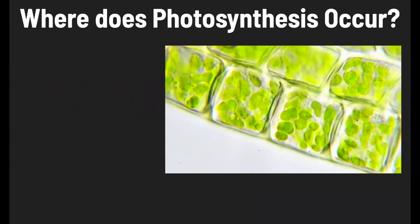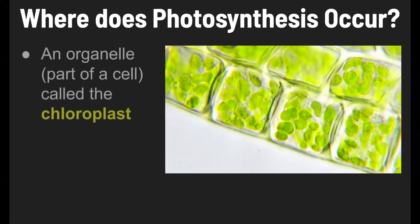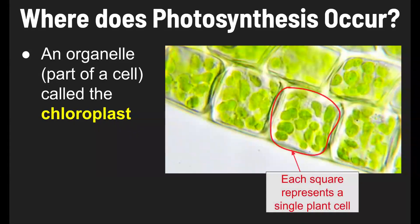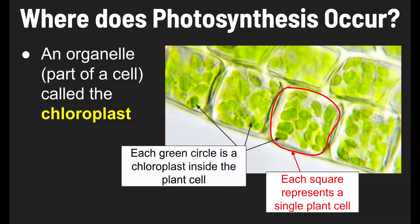Now, where does photosynthesis occur in plants? It's going to occur in each plant cell. There's a specific organelle, or part of a cell, where it happens — this part is called the chloroplast. Each square in this picture represents a single plant cell, and each green circle you see within that cell is a chloroplast.